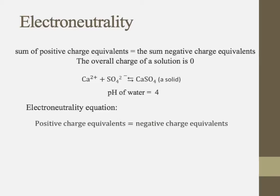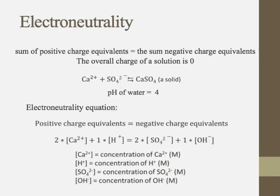So if we wanted to write the electroneutrality equation here, we would set all of the positive charge equivalents equal to all of the negative charge equivalents. So what would that essentially look like? So we've got a calcium ion here. There are two charges associated with that calcium ion, so that's why we have the two multiplied by the concentration of calcium. So hydrogen just has one positive charge associated with it, so that's why we just have the one times the hydrogen there.